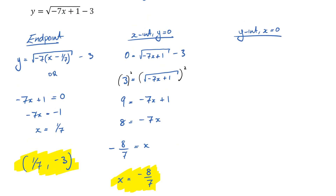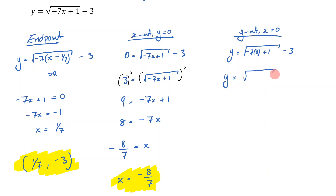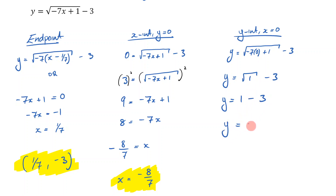Now for the y-intercept, which occurs when x equals 0. Substituting x equals 0: y equals the square root of negative 7 times 0 plus 1, minus 3. Negative 7 times 0 is 0, so we have the square root of 1, which is 1, minus 3. That gives y equals negative 2.